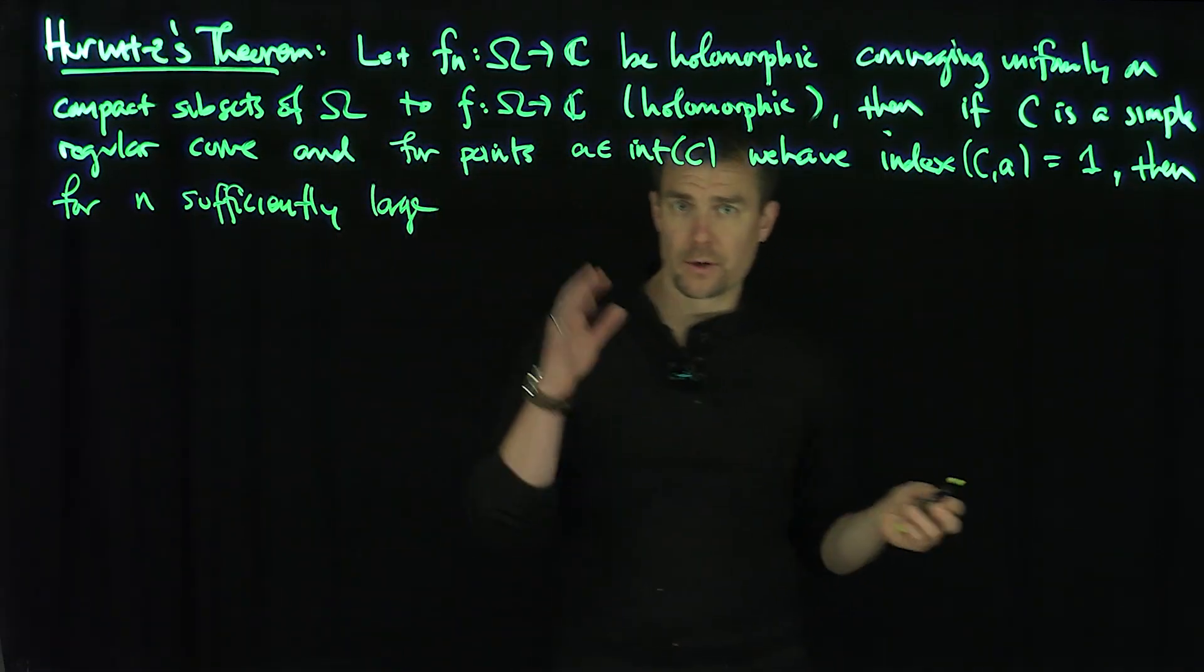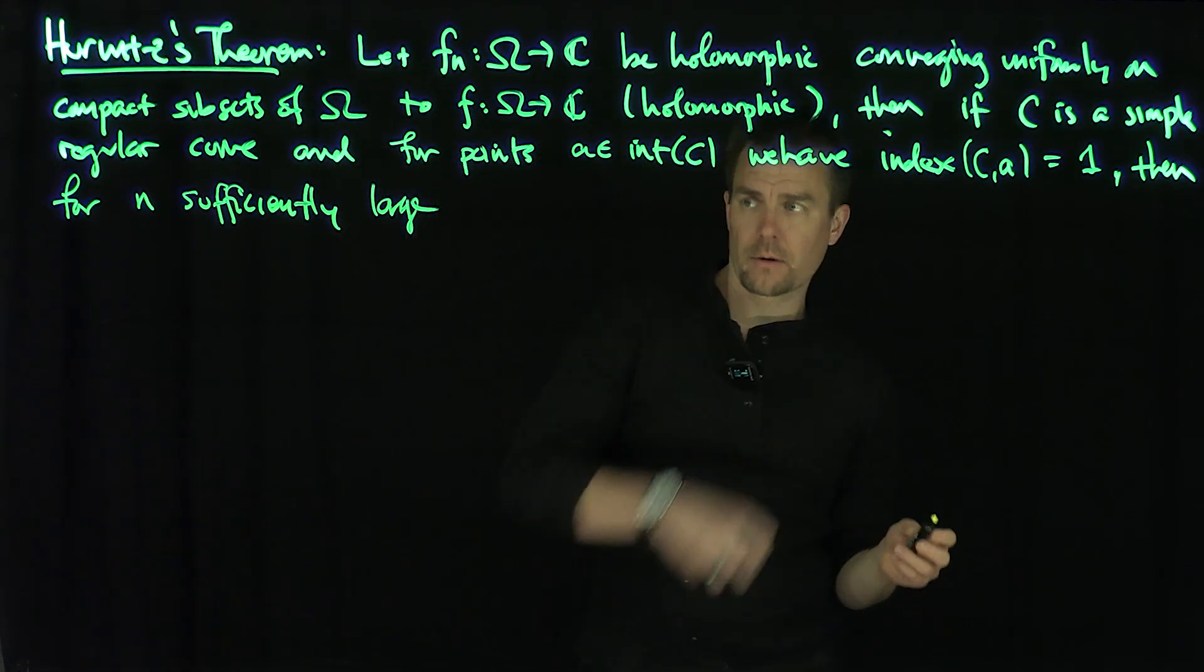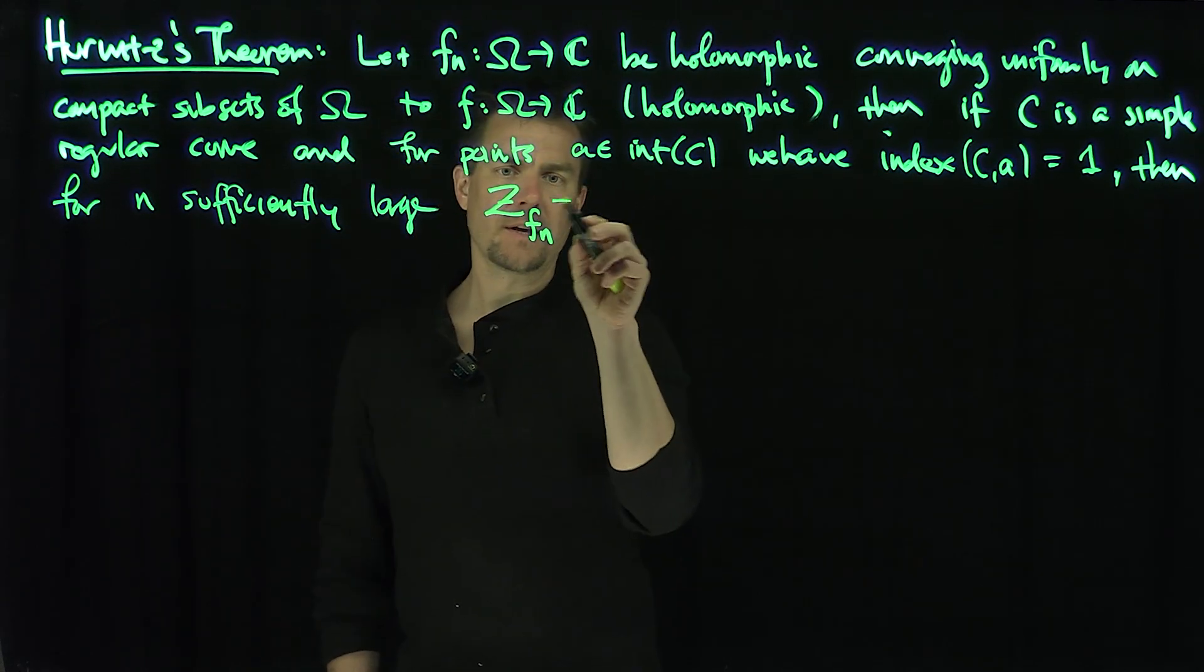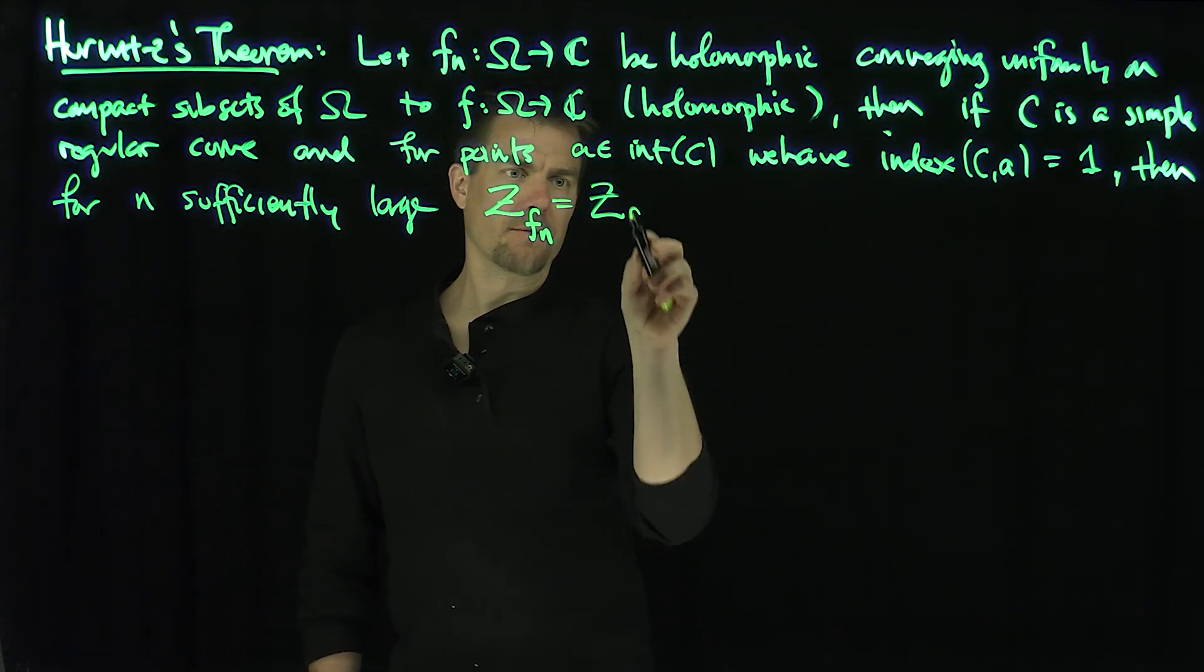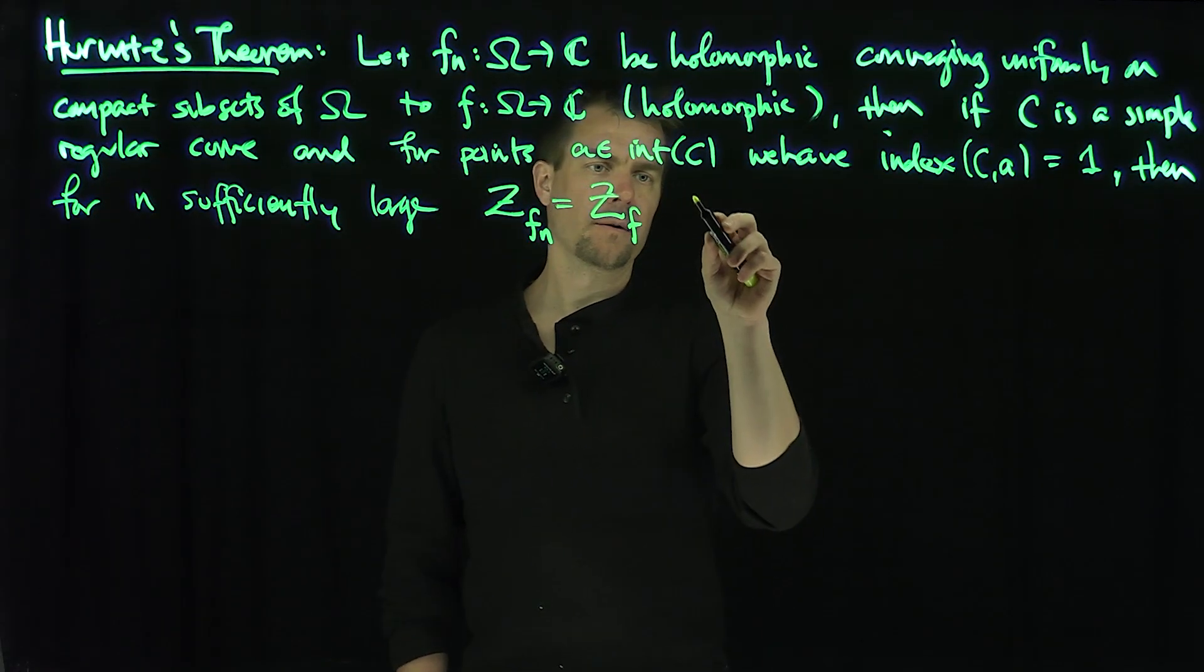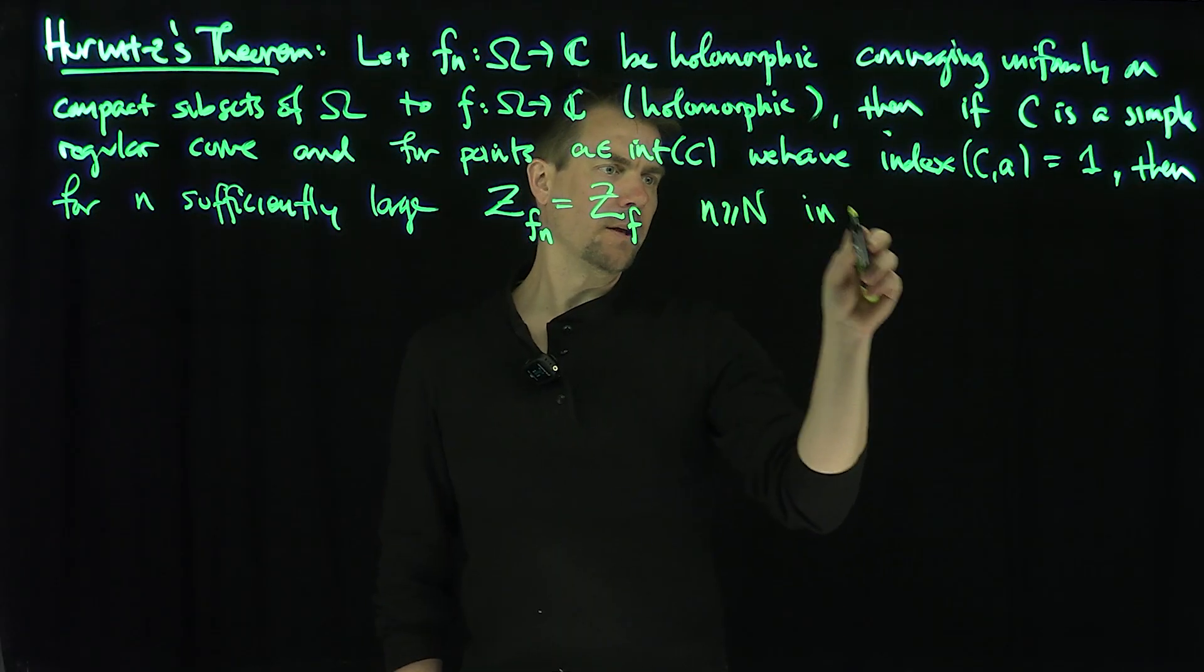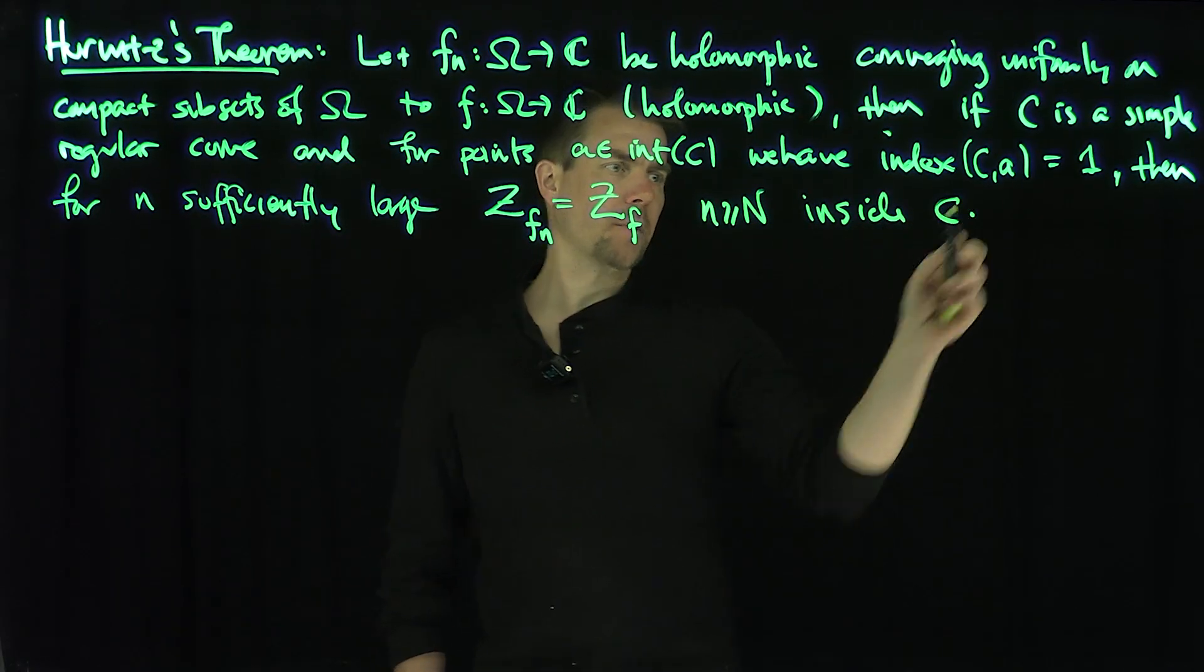the number of zeros of fn in the interior, the zeros of fn in the interior of C have to be the zeros of f for n bigger than or equal to N, in the interior inside C.